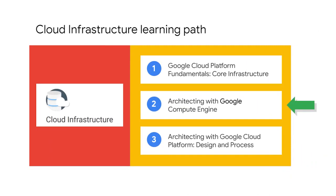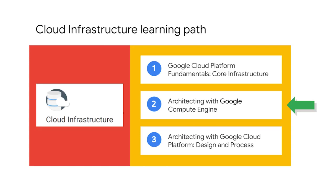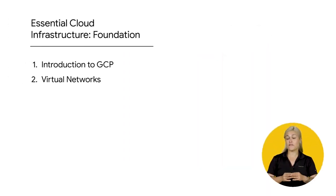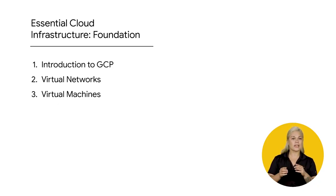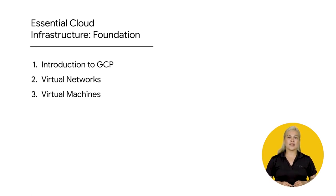The Architecting with Google Compute Engine courses are part of the Cloud Infrastructure Learning Path, designed for IT professionals responsible for implementing, deploying, migrating, and maintaining applications in the cloud. The prerequisite is the Google Cloud Platform Fundamentals core infrastructure course, which you can find in the link section for this video. The series consists of three courses. Essential Cloud Infrastructure Foundation is the first course. In it, we introduce you to GCP and how to interact with the GCP console and Cloud Shell, cover virtual networks where you will create VPC networks and other networking objects, and take a deep dive into virtual machines using Compute Engine.